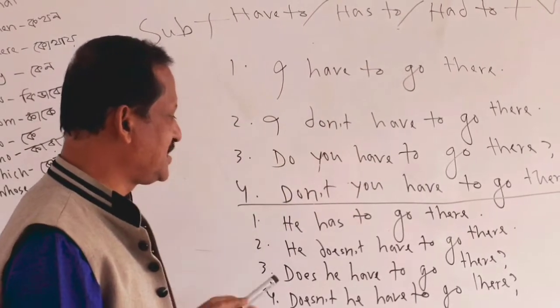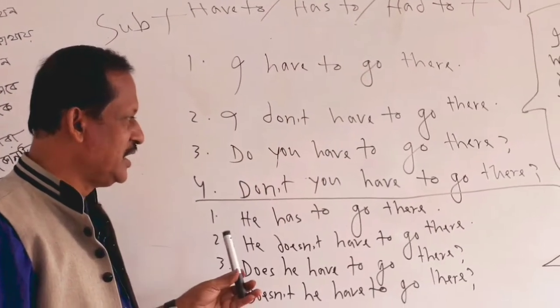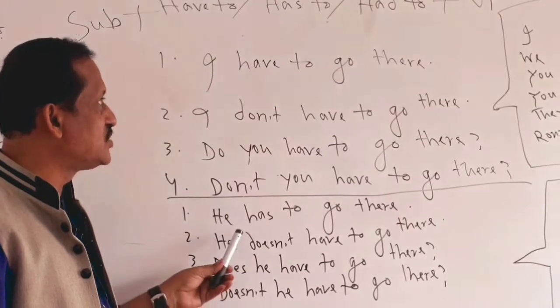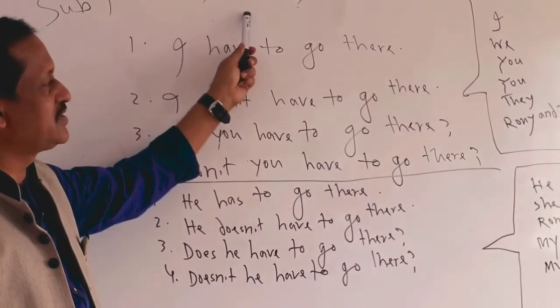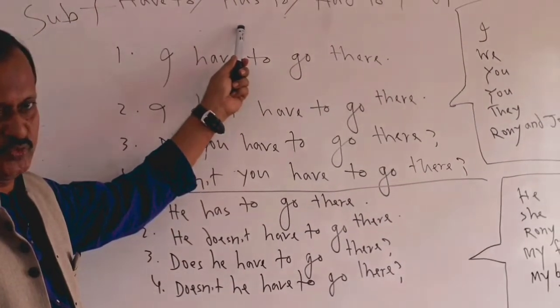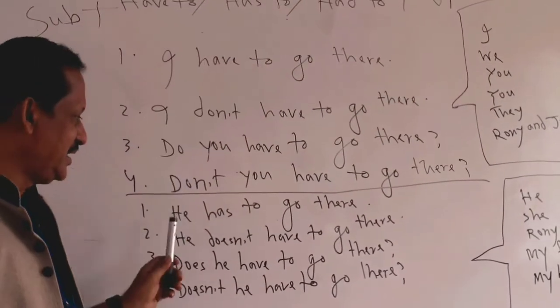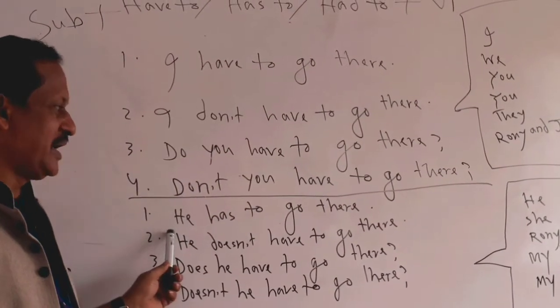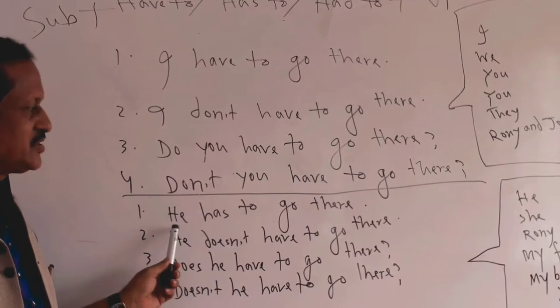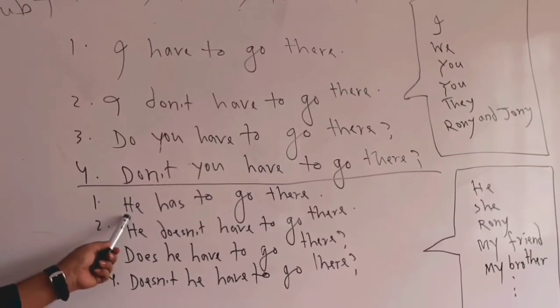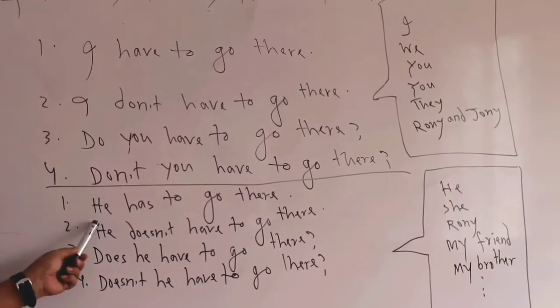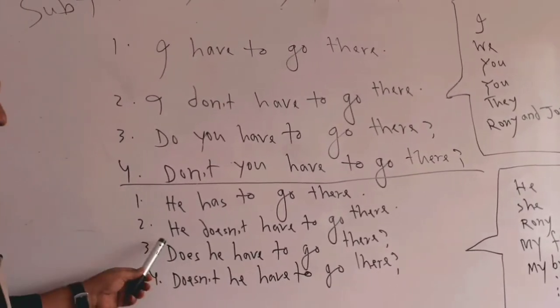Now let's move to another topic — 'has to.' I will mention 'has to' here. When the subject is 'he,' we use 'has to.' For example: 'He has to go there' — meaning he is obligated to go there.